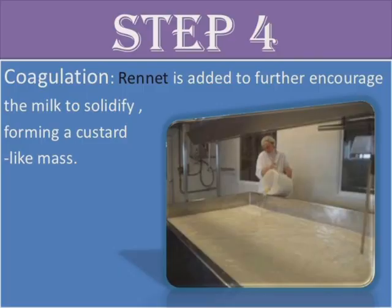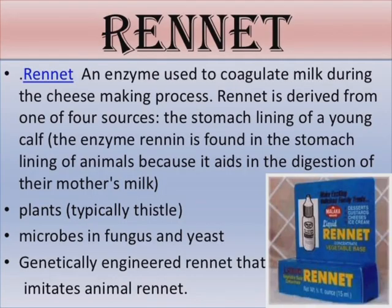The fourth step is coagulation. Rennet is added to further encourage the milk to solidify, forming a custard-like mass. Rennet is an enzyme used to coagulate milk during the cheese-making process. It is derived from one of four sources: the stomach lining of a young calf, where the enzyme rennin aids in the digestion of mother's milk; plants, typically thistle; microbes, fungus and yeast; and genetically engineered rennet that imitates animal rennet.